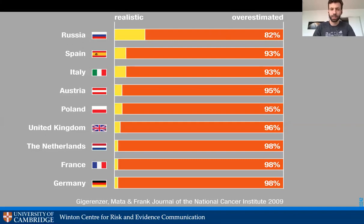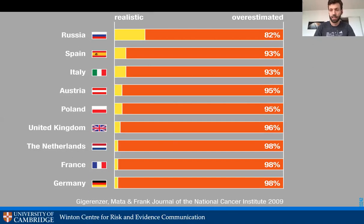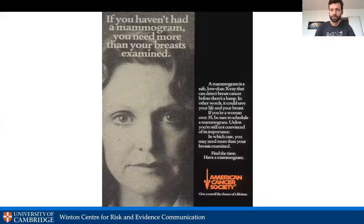We looked a lot at breast cancer — specifically the proportions of the population that misunderstand the benefits of mammography for improving breast cancer outcomes. Mammography can detect problems in advance and lead to treatment, but it can also lead to overtreatment, and it can fail to detect problems. It turns out mammography is not nearly as effective at reducing death as people think. Countries dramatically overestimate its effectiveness — but some more than others. Russia has the most accurate impression, probably because they've had the least public health messaging about mammography's effectiveness.